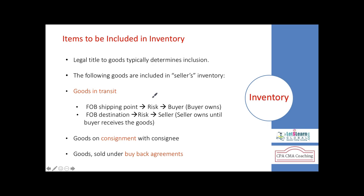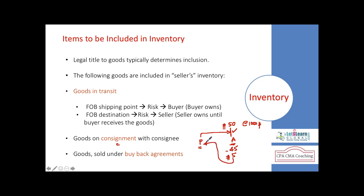Goods on consignment means a principal sends goods to an agent to be sold on a commission basis. For example, a principal sends 50 units to be sold at $1,000 each. Though the agent physically has the 50 pieces in his warehouse, he is not the owner — the principal is. At year-end, if the agent sold 45 pieces and has 5 remaining, those 5 pieces should be shown as closing stock in the principal's books, not the agent's books.